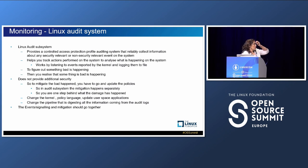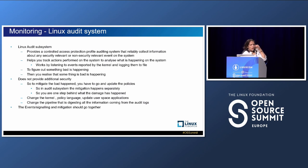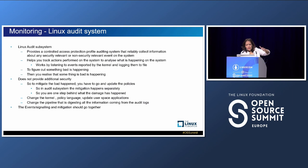However, the audit framework does not provide additional security enforcement. If something bad has happened, you get to know from the logs, but action is not automatically taken. A security engineer will go and update the security policies based on the logs so that further damage does not happen, but mitigation is not provided directly. Logging and mitigation happen separately. Also, since the framework is part of the kernel, adding new policies or making changes delays the whole mitigation cycle.